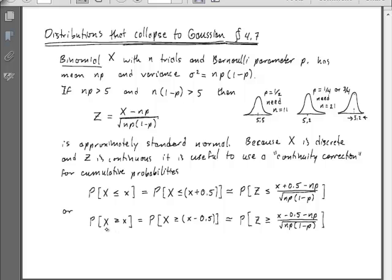By the same argument, saying that x has to be greater than or equal to some specific value is the same on the discrete axis as saying x has to be greater than x minus one half. So now we can integrate Z beyond x minus 0.5 in that formula for Z.